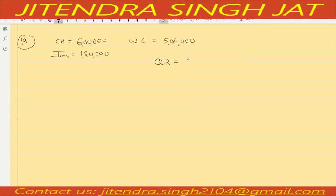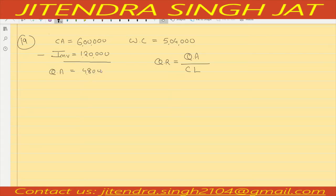Quick assets are not directly given. Current assets are given and inventories are given, so we subtract inventory from current assets to get quick assets or liquid assets. Six lakh minus 1 lakh 20,000 gives us 4 lakh 80,000 as your quick assets.